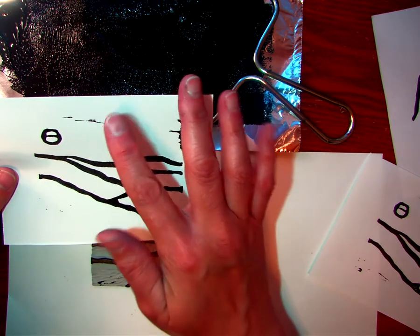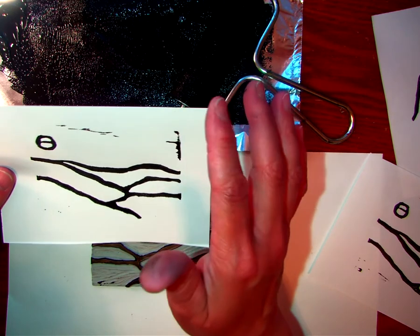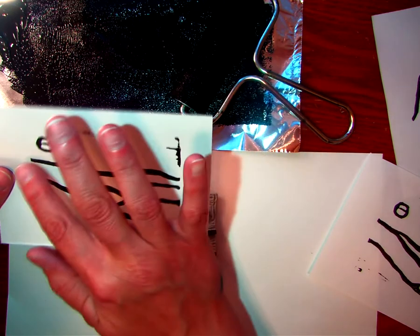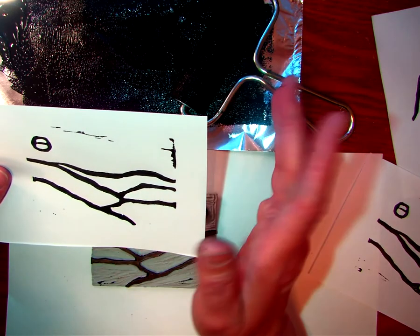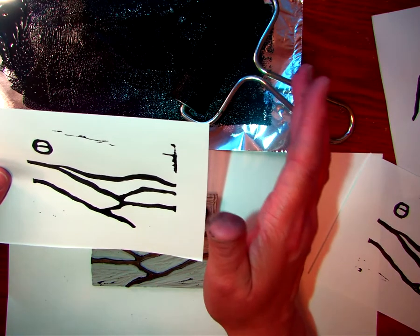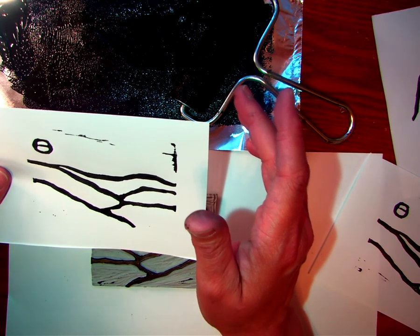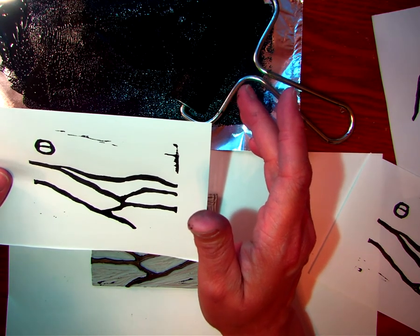If you use ink that is not water soluble, that wouldn't happen. But that doesn't wash out so easily, so we don't usually use that. We usually use this and then just be really careful when we get to the edge. Or don't use a wet media if you're nervous about that happening. You could use colored pencils, markers, chalk pastels, oil pastels, or crayons. All of those would work perfectly with this.